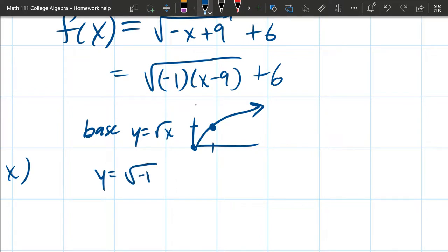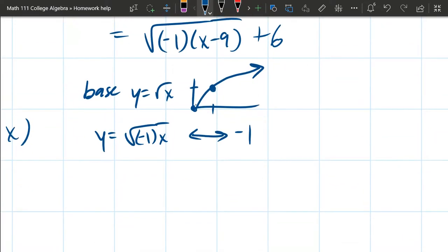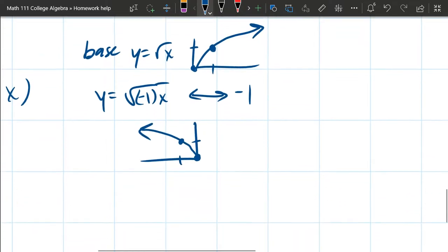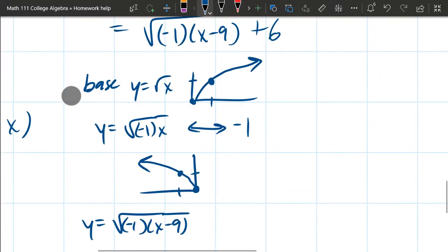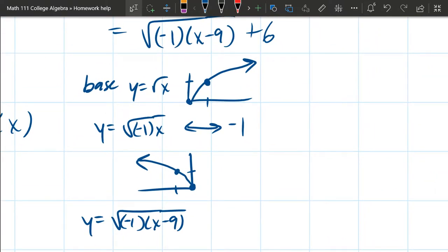So this will be square root negative 1 times x. So horizontal transformation of negative 1. It'll reflect across the y-axis. Right here. And next up will be our horizontal shift. Now remember horizontal shifts and stretches, but shifts will go backwards of what they look like. So here minus 9 actually means shift to the right 9.